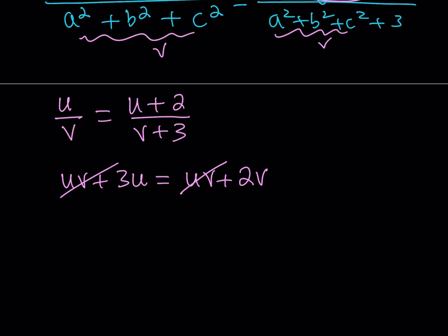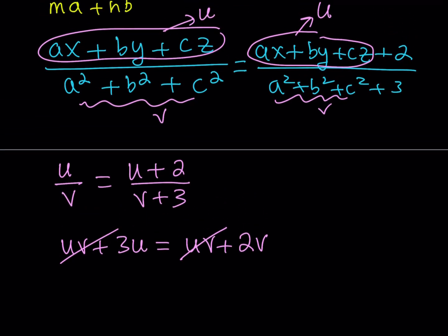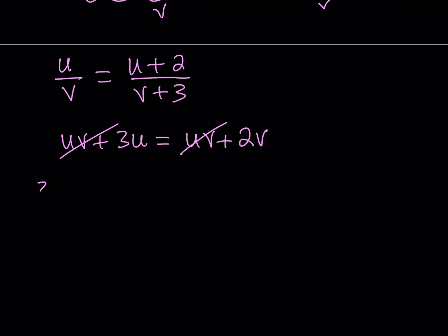From here, we get some important information. Let's go ahead and back substitute. What is u? Well, u is ax plus by plus cz. So 3 times ax plus by plus cz equals 2 times v. And remember, v is a squared plus b squared plus c squared.